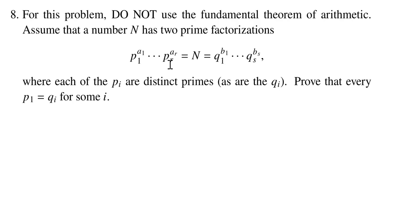In order to show uniqueness, one of the necessary steps is to show that if you have a prime — in this case we're looking at p1 — occurring as a prime factor in one prime factorization, then that prime also must be a factor in any other factorization. So maybe p1 equals one of these q_i's — we don't know which one, but it should be one of them. It really comes down to Euclid's Lemma.